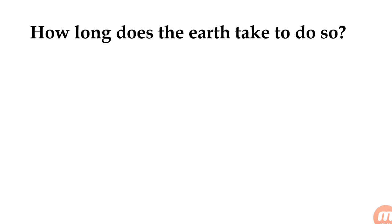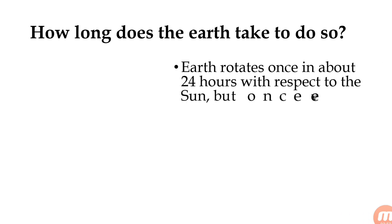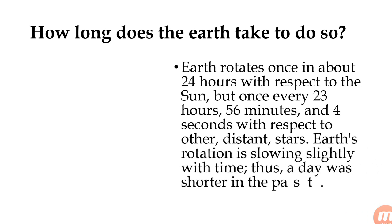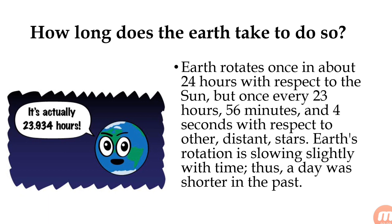How long does the earth take to do so? The earth rotates once in about 24 hours with respect to the sun, but once every 23 hours, 56 minutes, and 4 seconds with respect to others. Earth rotation is slowing slightly with time, so a day was shorter in the past. Actually it is 23.934 hours to complete one full rotation.